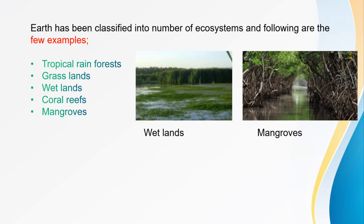Today we covered levels of biodiversity. Biodiversity has three levels of diversity: species diversity, genetic diversity, and ecosystem diversity. Thank you.